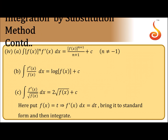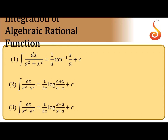In integration by substitution: if you have [f(x)]^n · f′(x), you directly apply the x^n formula. Two specific important formulas are: ∫f′(x)/f(x) dx = log|f(x)|, and ∫f′(x)/√f(x) dx = 2√f(x) plus constant. For rational functions, the standard formula ∫1/(a²+x²) dx = (1/a) tan⁻¹(x/a) + c.